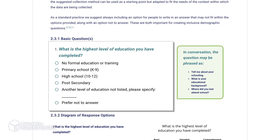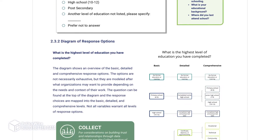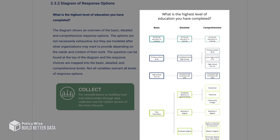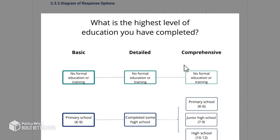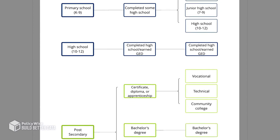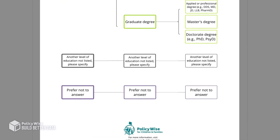A suggested question is given along with ideas for how to ask about a variable in a more conversational way. For each suggested question, there is a chart that shows three levels of responses – basic, detailed and comprehensive. Click on the chart to see a closer view or print. Based on your needs, you can decide which level is best for you.